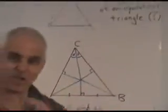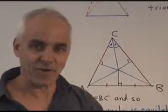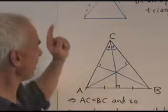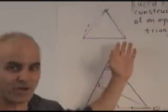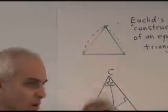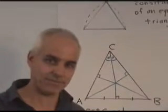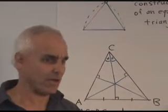The logical flaw, which sort of went unnoticed for millennia, was that how do we really know, apart from the picture, that these two circles that we've drawn actually intersect? Bit of a subtle business.